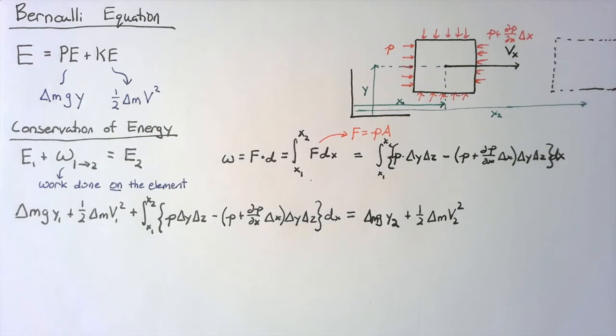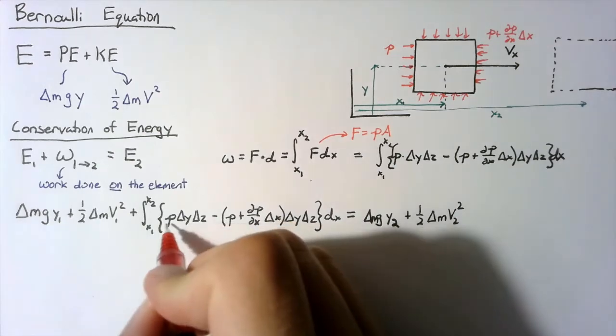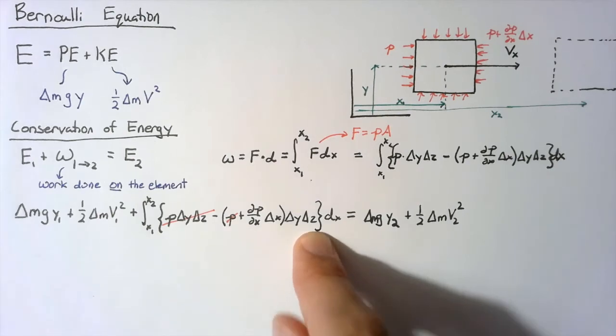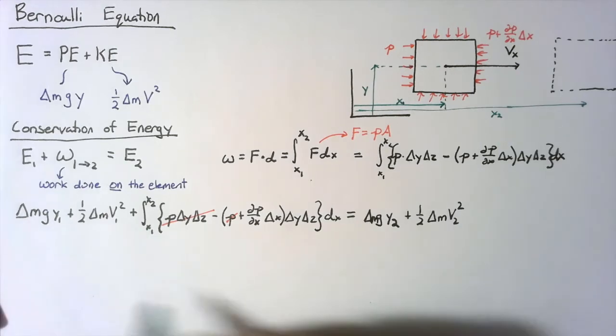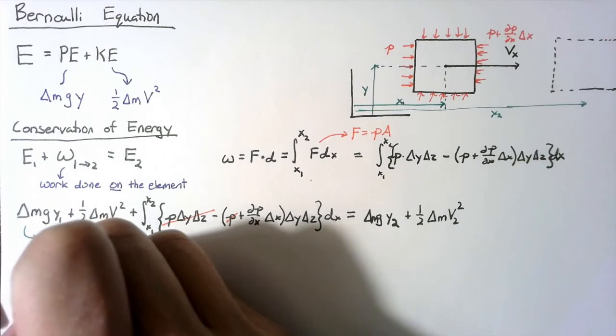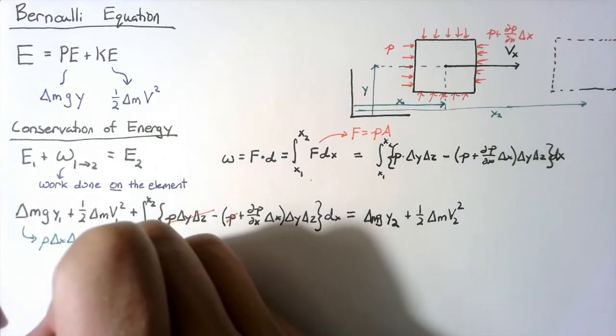All that's left is the simplification of this integral. So we can get rid of the p's, which means that we end up with just a negative dp dx multiplied by the volume, which we can take out of the integral. Keep in mind that this delta m is going to be equal to rho times delta x delta y delta z.